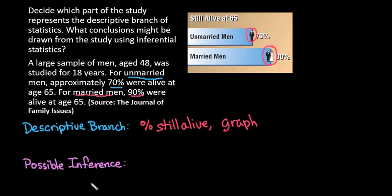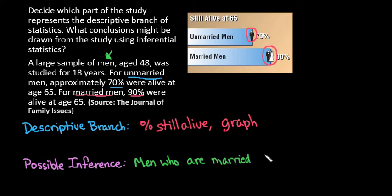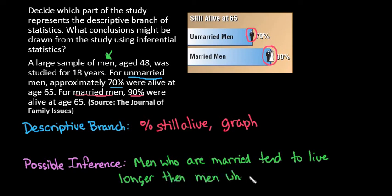For the inferential branch, you're going to try to make an inference about the population. In this case, our population would be men. We studied a large sample of men, so our overall population is men. A possible inference might be that men who are married tend to live longer than men who are unmarried. A lot of times we study a specific situation and then try to make a conclusion about the general population.